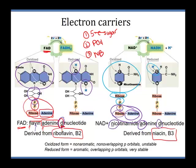For those in organic chemistry: in the oxidized forms of these electron carriers, they're actually non-aromatic — they don't have those overlapping p-orbitals needed to be aromatic, so they're quite unstable. As soon as you reduce them, though, you add in aromaticity, create overlapping p-orbitals, and the reduced form becomes very, very stable. Just a little tidbit.